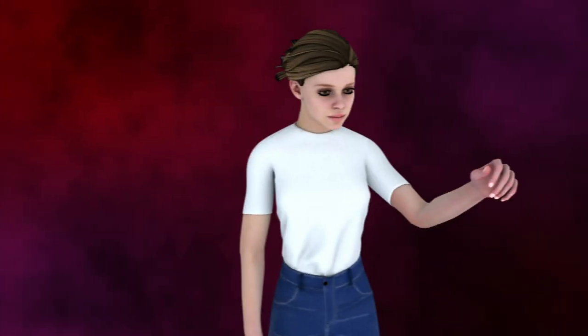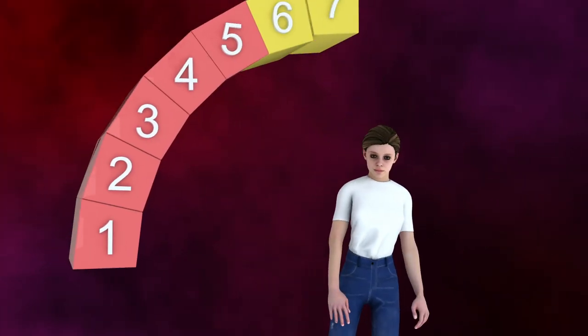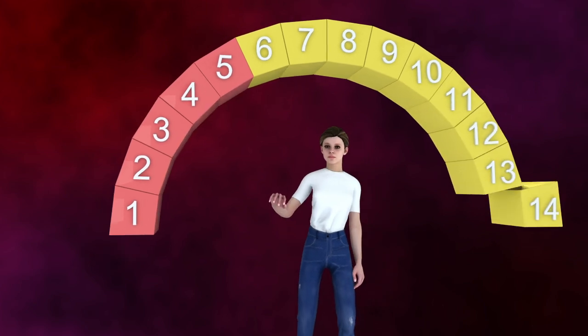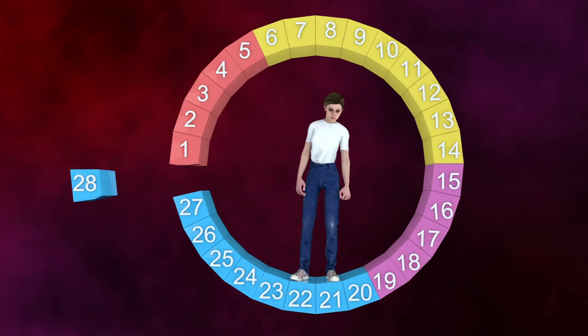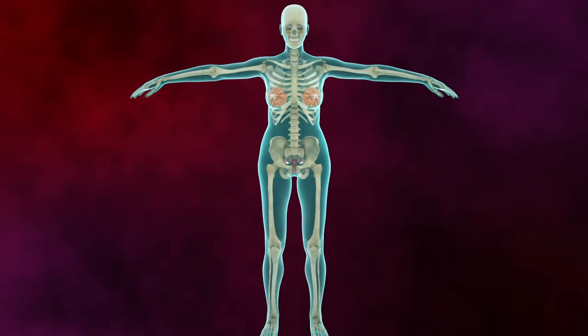Menstrual cycle. It all starts with your first period, usually around ages 12 to 13, called menarche. From then on, it happens every 28 to 35 days. Here's how it works.